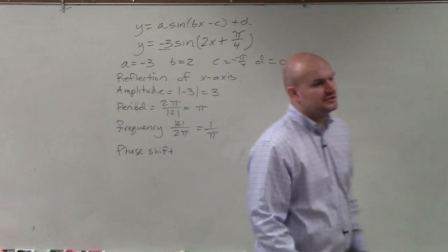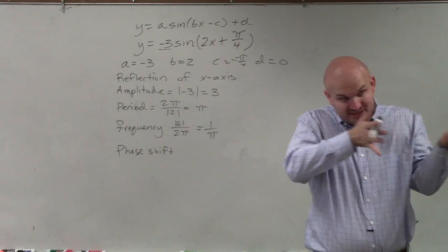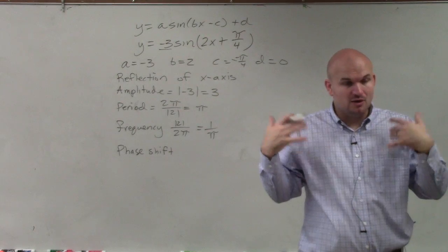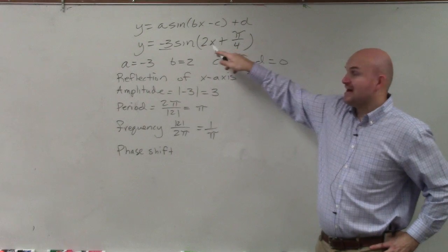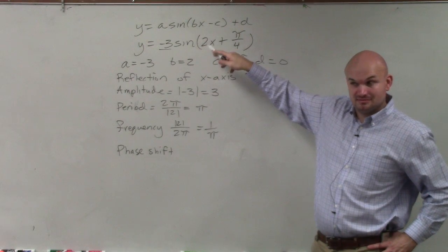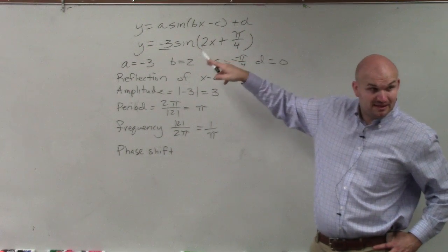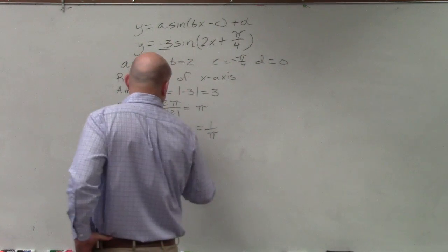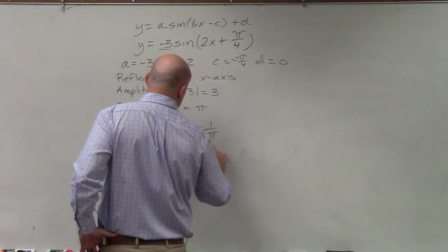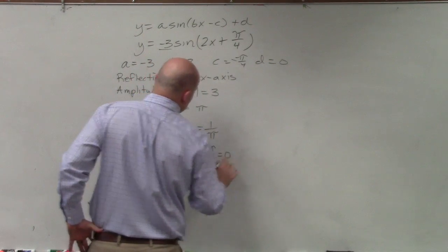When we're identifying our phase shift, which is basically us shifting left to right, one thing I want you to identify is we have a b in this case. Does everybody see that? Therefore, to identify the phase shift, I need to take 2x plus π over 4 and set it equal to 0.